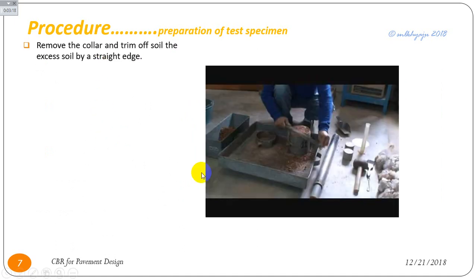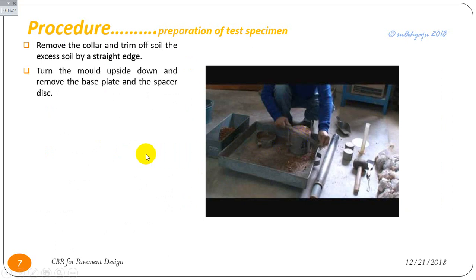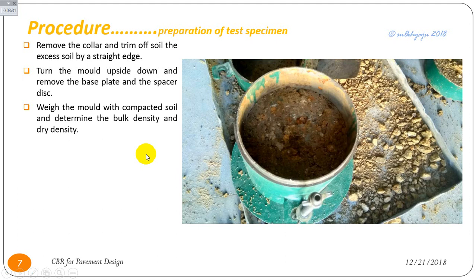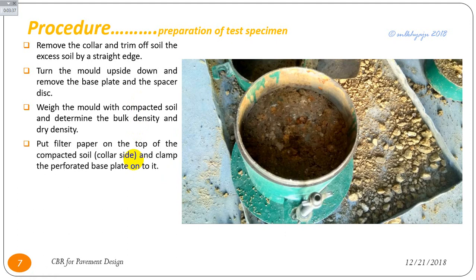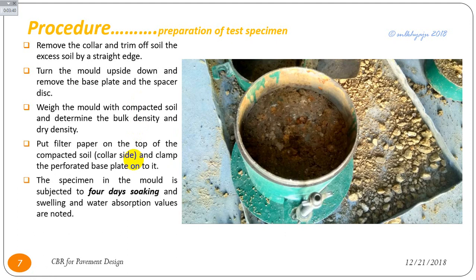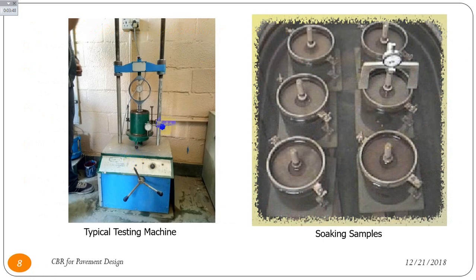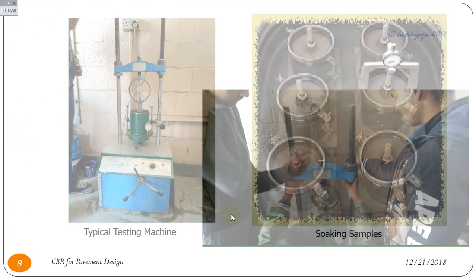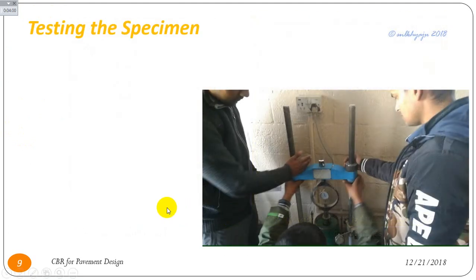After compaction, remove the collar and trim off excess soil with a straight edge. Weigh the mold with compacted soil and determine the bulk density and dry density. The specimen in the mold is then subjected to 4 days of soaking, and swelling and water absorption values are noted. This figure shows the typical testing machine for CBR in the lab and the soaking sample.